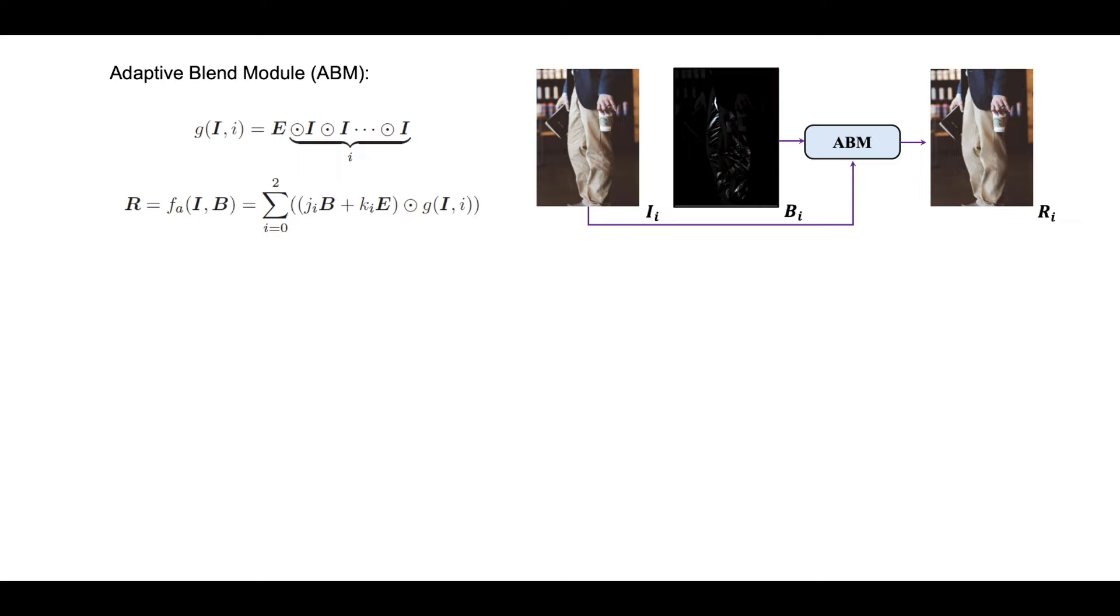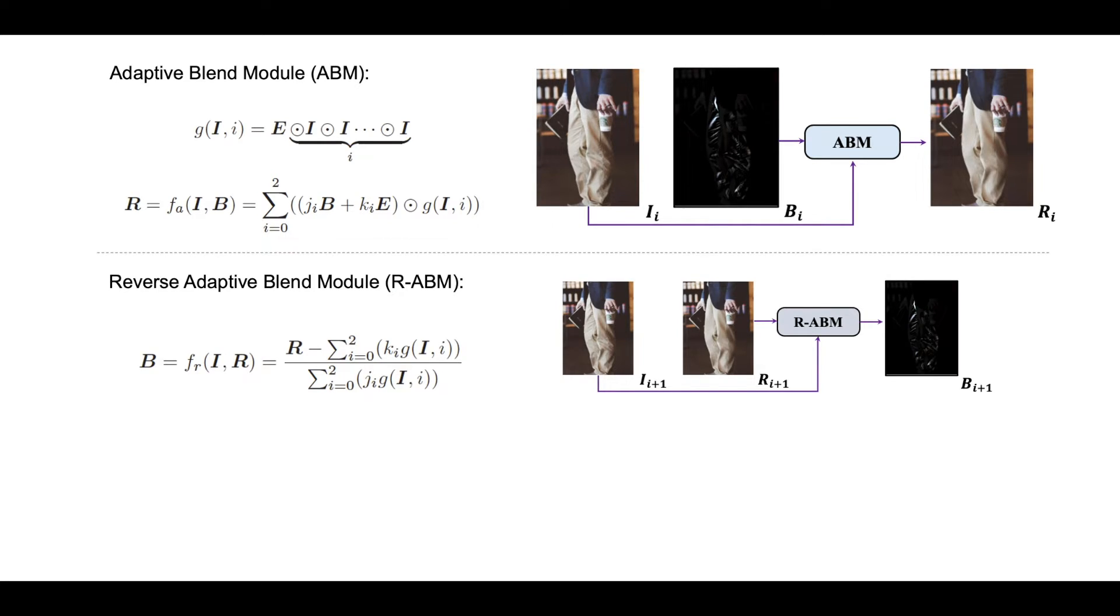In BPL, inspired by the blend layer in digital image editing, we develop a lightweight adaptive blend module, ABM, and its reverse version, RABM, to implement the fast expansion from the low-resolution results to the higher ones. Utilizing the blend layer as an intermediate medium, ABM and RABM offer an adaptive transformation between the image I and the result R, ensuring great extensibility and detail fidelity.